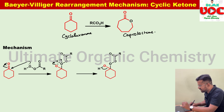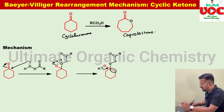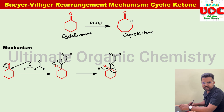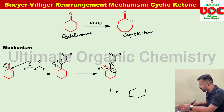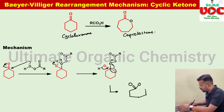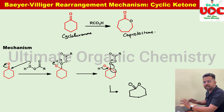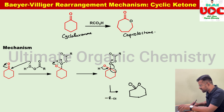Once the Criegee intermediate is formed, the electron migrates toward the carbon atom. As a result, the carbon–carbon single bond is broken and migrates toward the oxygen atom — basically a carbon to oxygen rearrangement. The bond is broken and carboxylic acid leaves. To draw the structure correctly, initially draw it without disturbing the other bonds: C=O formation occurs, with an oxygen in the ring, and the carbon–carbon bond is broken and connected to that oxygen atom.